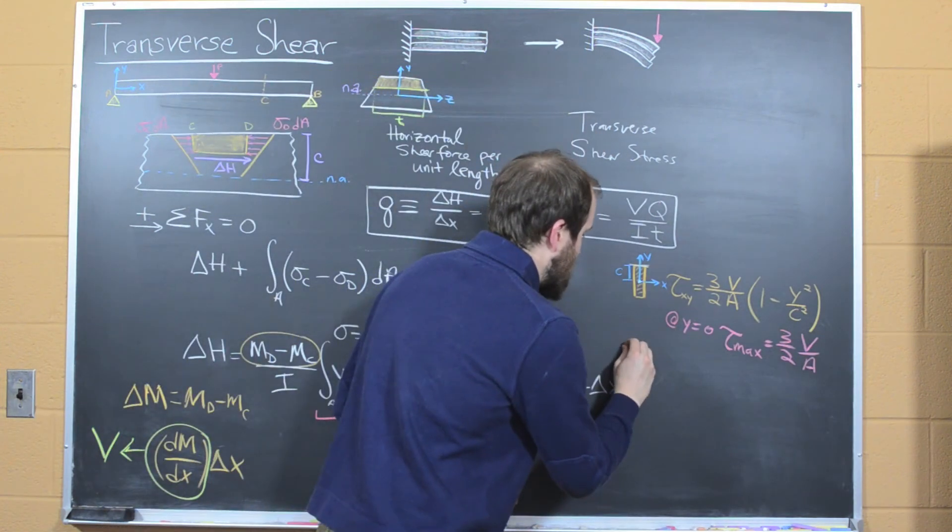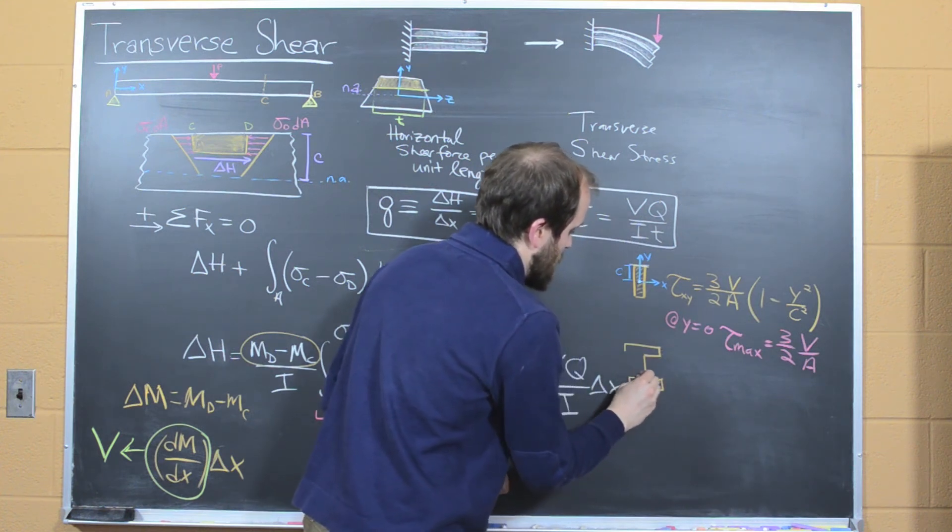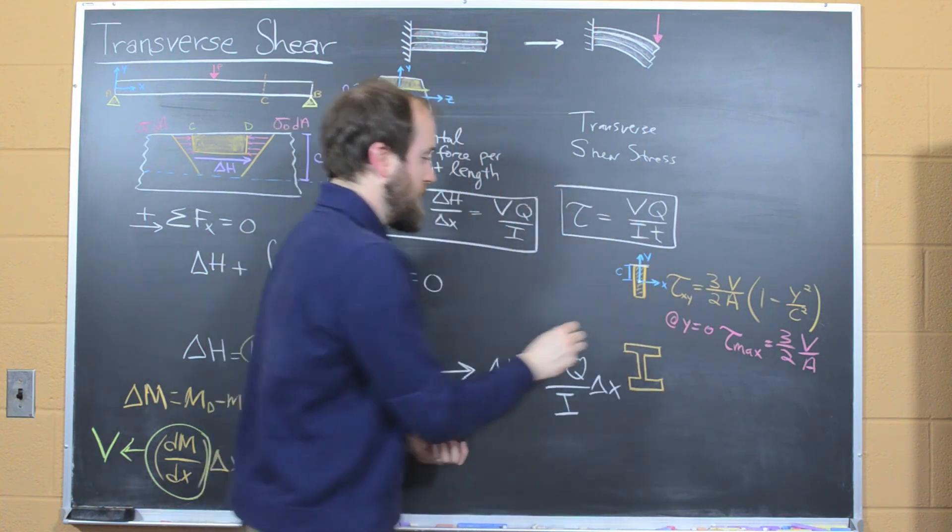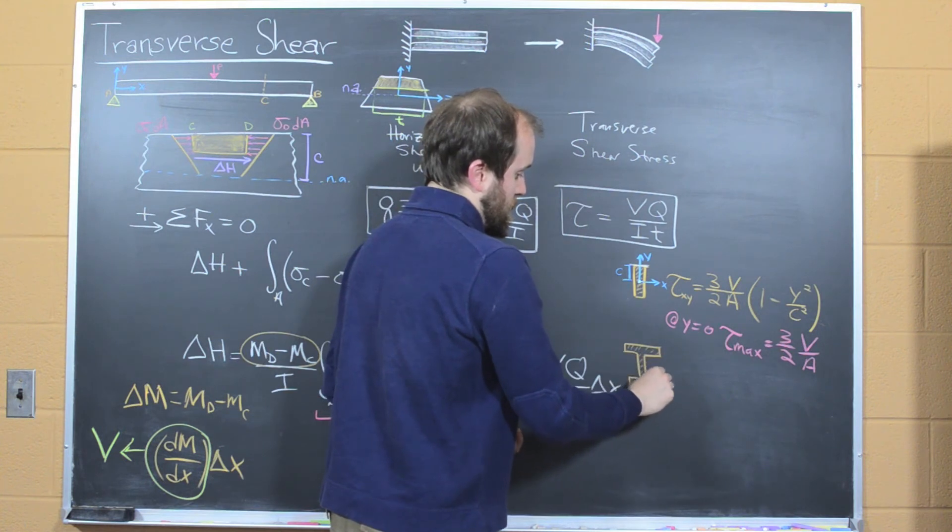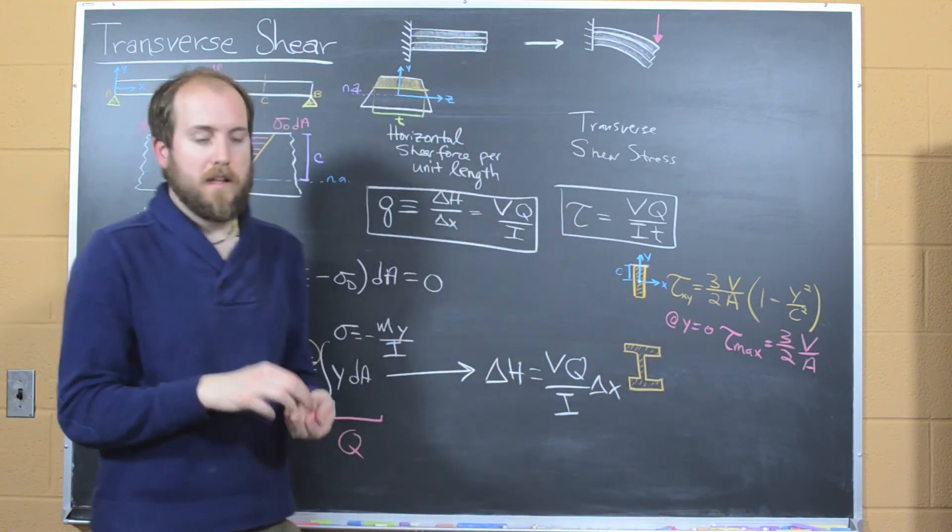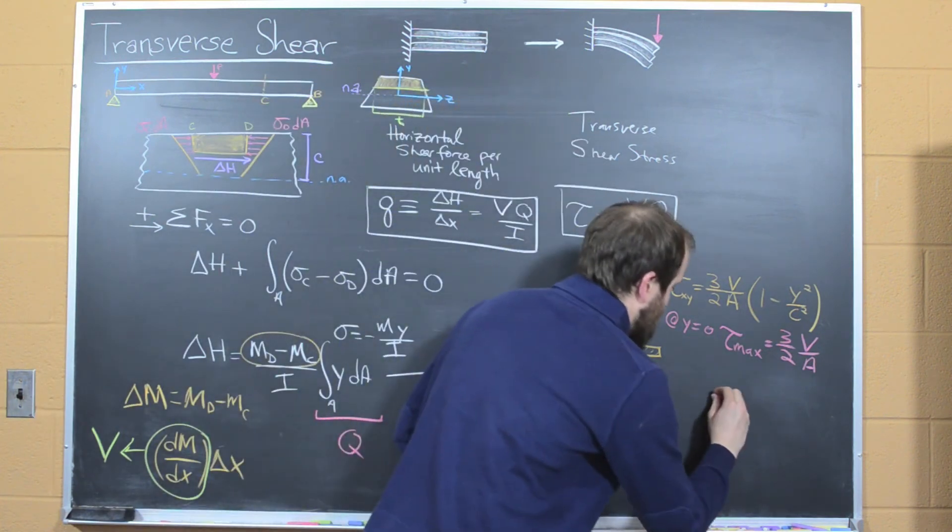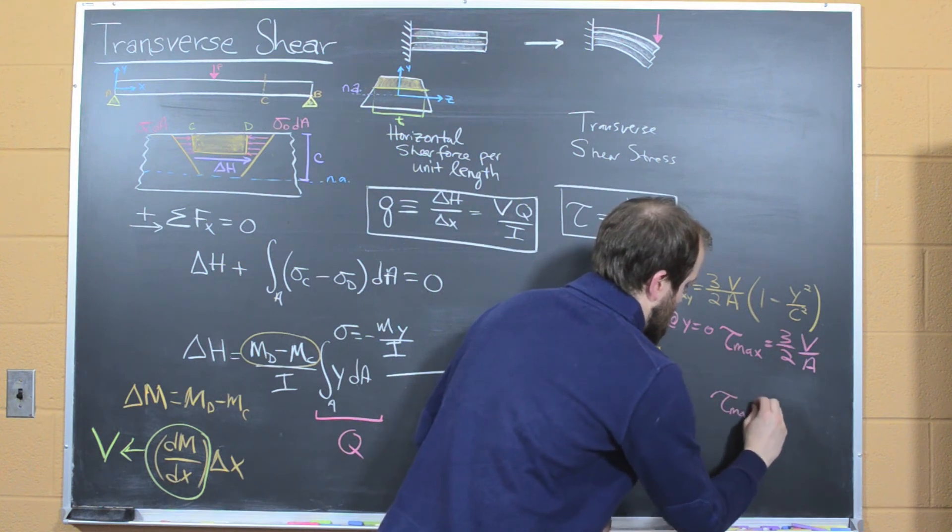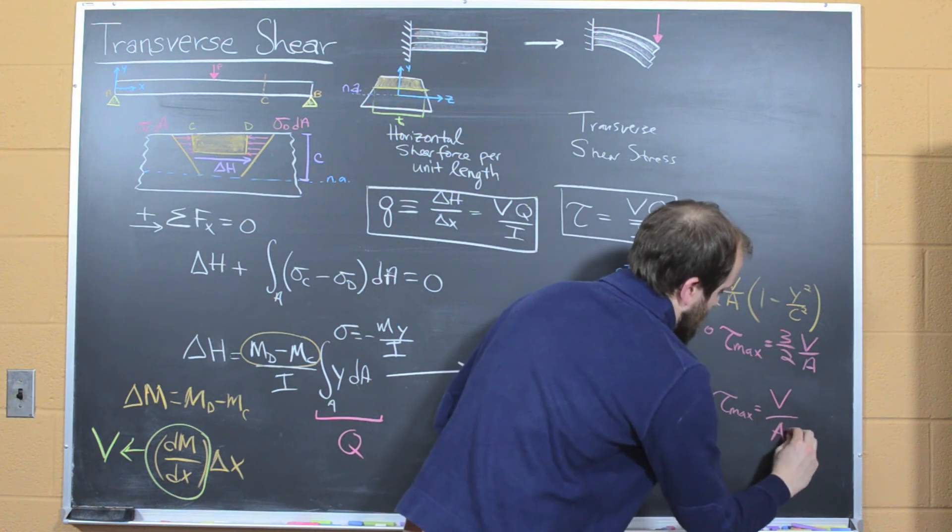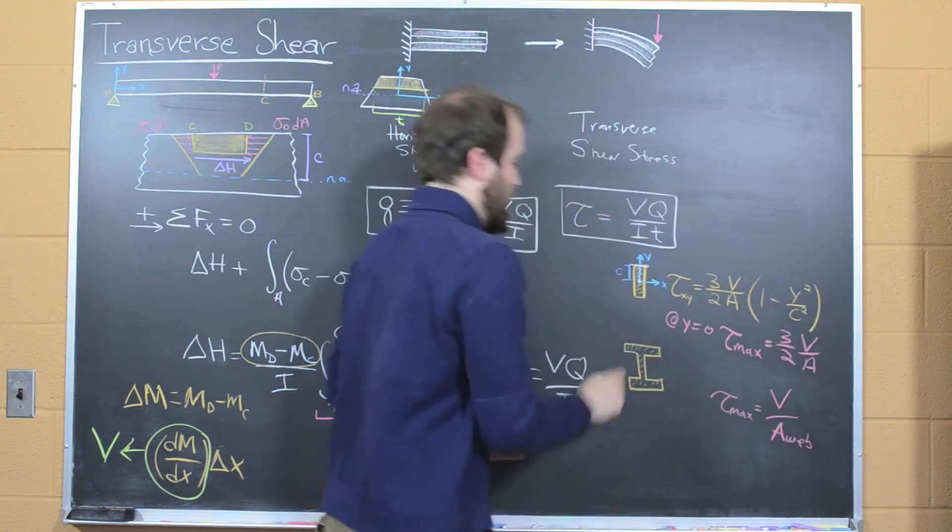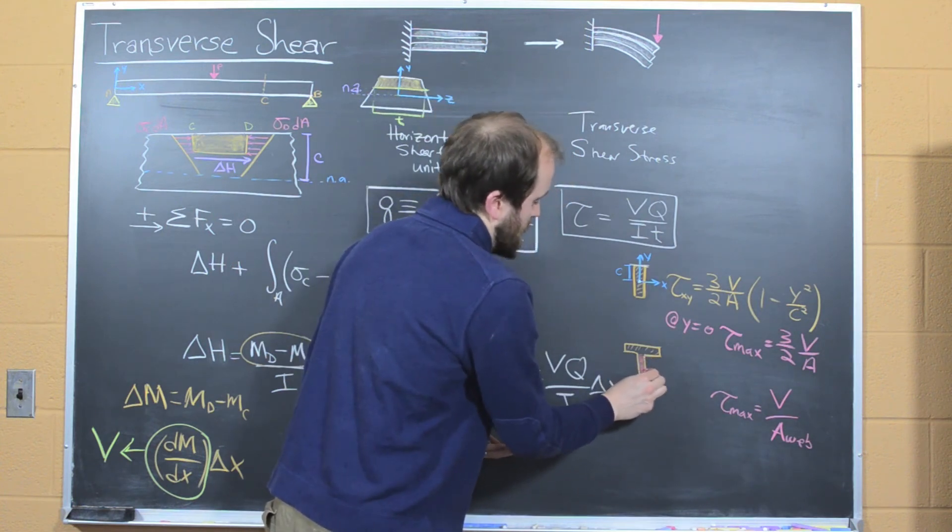The other common case that people run into is an American Standard S-beams, or wide flange W-beams. And in this case, our maximum shear stress is simply equal to the shear force over the area of the web. And so if these are the flanges up top, the area of the web is the cross sectional area of this portion.